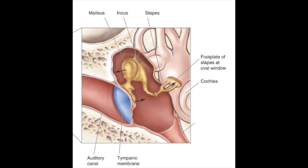The stapes is also connected to another membrane called the oval window. When the tympanic membrane vibrates, it causes the ossicles to move, which pushes and pulls against the oval window. The pushing and pulling of the oval window generates pressure waves in the inner ear and causes fluid in the inner ear to move.